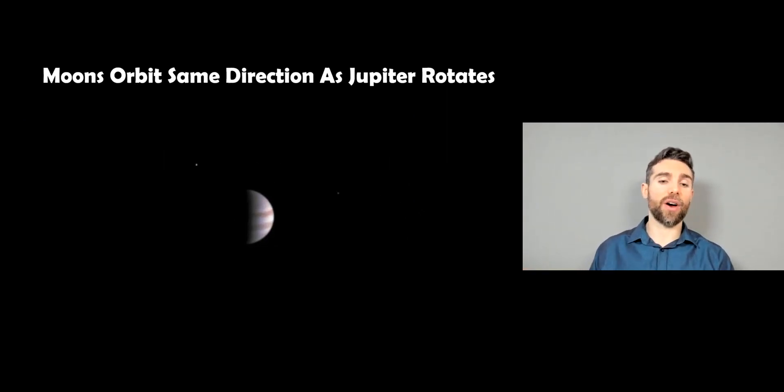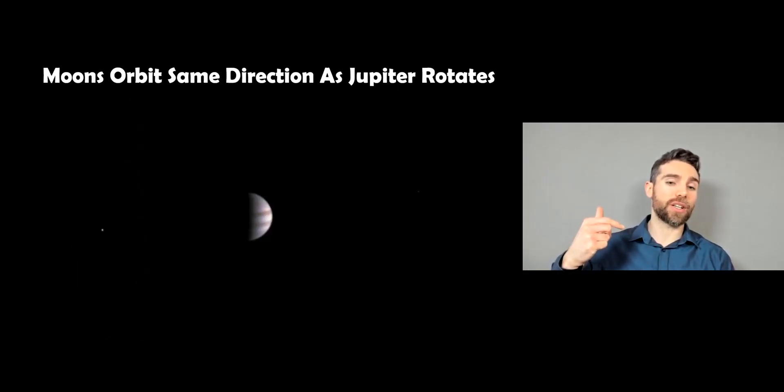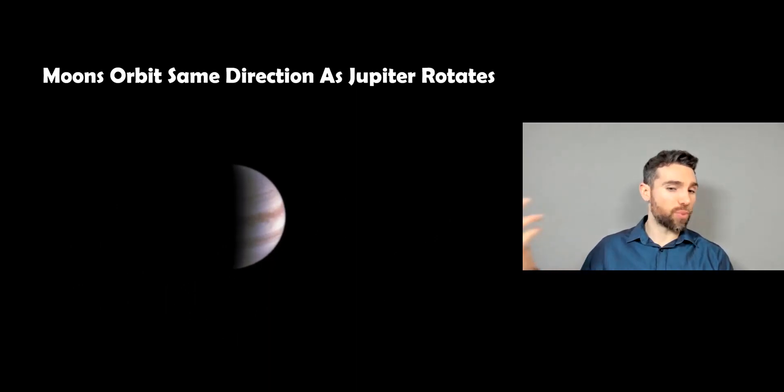And you can see a nice video there taken by a spacecraft as it gets closer. You can see Jupiter is rotating, and you can then see the moons actually going around the outside as well, which are the Galilean moons. So these moons orbit the same direction that Jupiter rotates prograde.